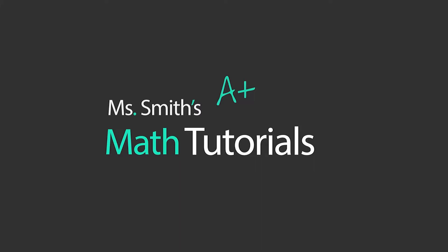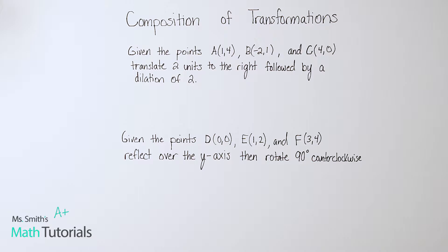Welcome to Miss Smith's Math Tutorials. I'm Miss Smith. In this video, we're going to be talking about composition of transformations, which is basically a fancy way of saying we're going to do more than one transformation at a time. So we have learned the four different types of transformations: dilations, translations, rotations, and reflections. If you don't know what any of those are, you definitely want to watch those videos first. Let's dive right in.